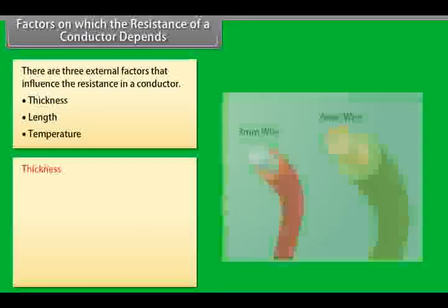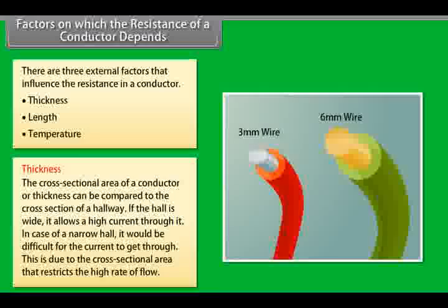Thickness. The cross-sectional area of a conductor, or thickness, can be compared to the cross-section of a hallway. If the hall is wide, it allows a high current through it. In case of a narrow hall, it would be difficult for the current to get through. This is due to the cross-sectional area that restricts the high rate of flow.